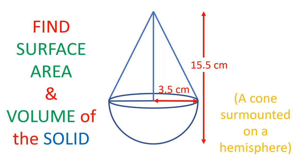Hello friends, welcome to our YouTube channel. How to find the surface area and volume of a solid. The solid is in the form of a hemisphere mounted by a cone. The total height of the solid is 15.5 cm. The radius of the hemisphere is 3.5 cm, which is the same as the radius of the cone. So let us try to find out the volume and surface area.